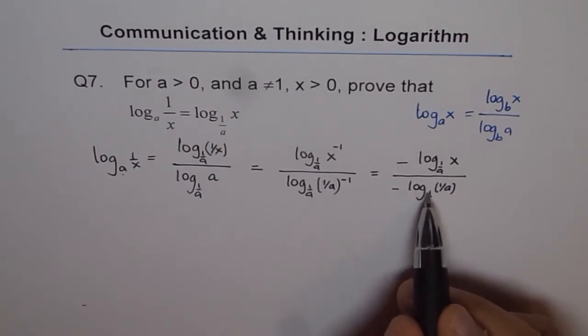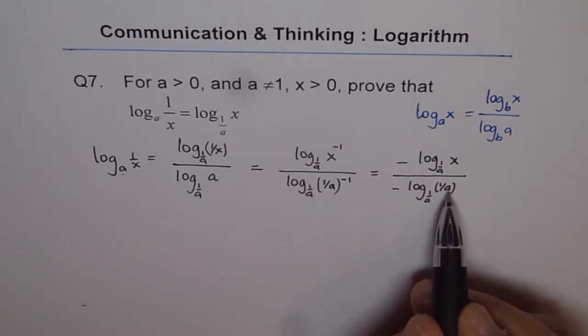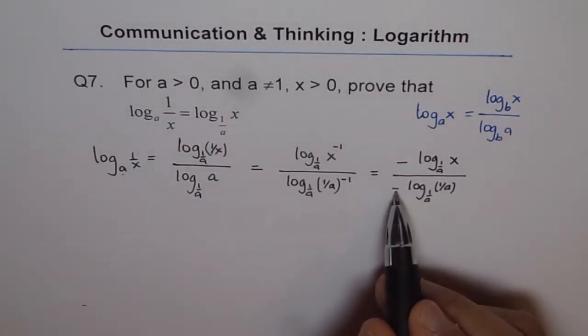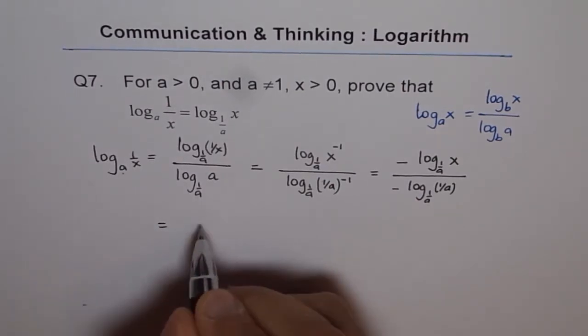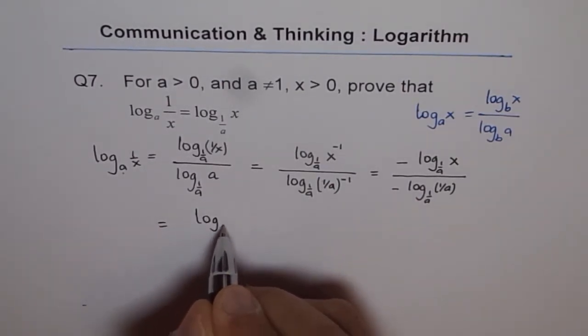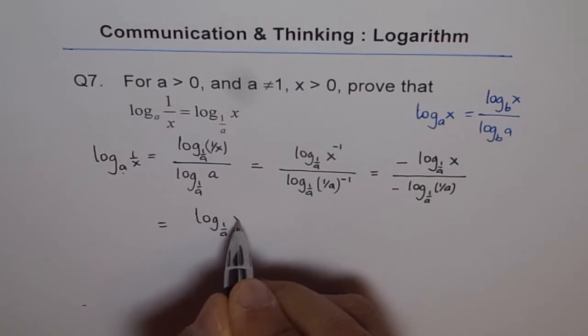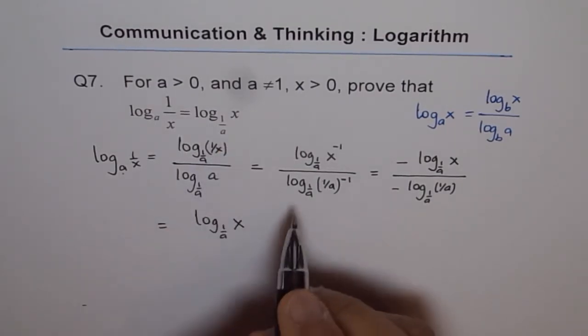Log_(1/a)(1/a) will be 1, correct. And minus minus cancels out, so we are left with log to the base 1 over a of x. Do you see? And that is the right side.